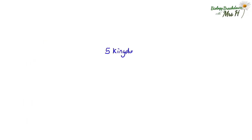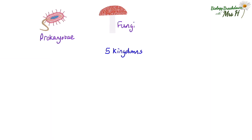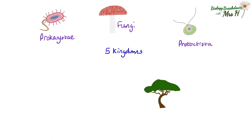Organisms will belong to one of the five kingdoms of life. They could belong to the kingdom Fungi, Prokaryote, Protoctista, Plantae, or Animalia.